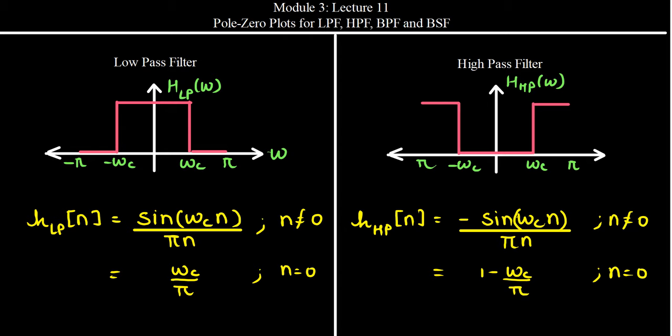The high pass filter passes the frequencies that are greater than the cutoff frequency omega_c. Its time domain equivalent is h_hp = -sin(omega_c * n) / (pi * n) for n not equal to 0, and it is equal to 1 - omega_c / pi for n equal to 0.